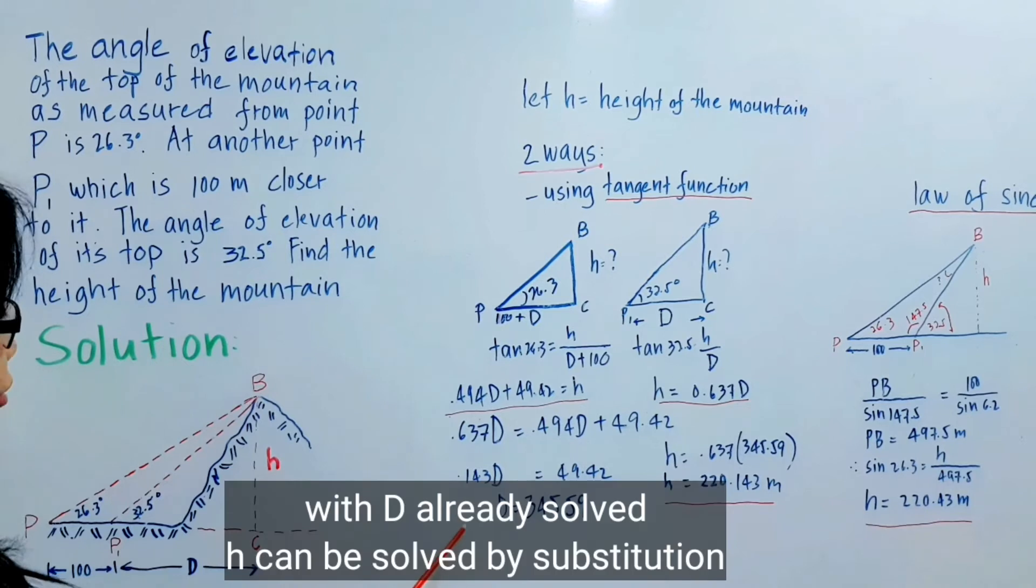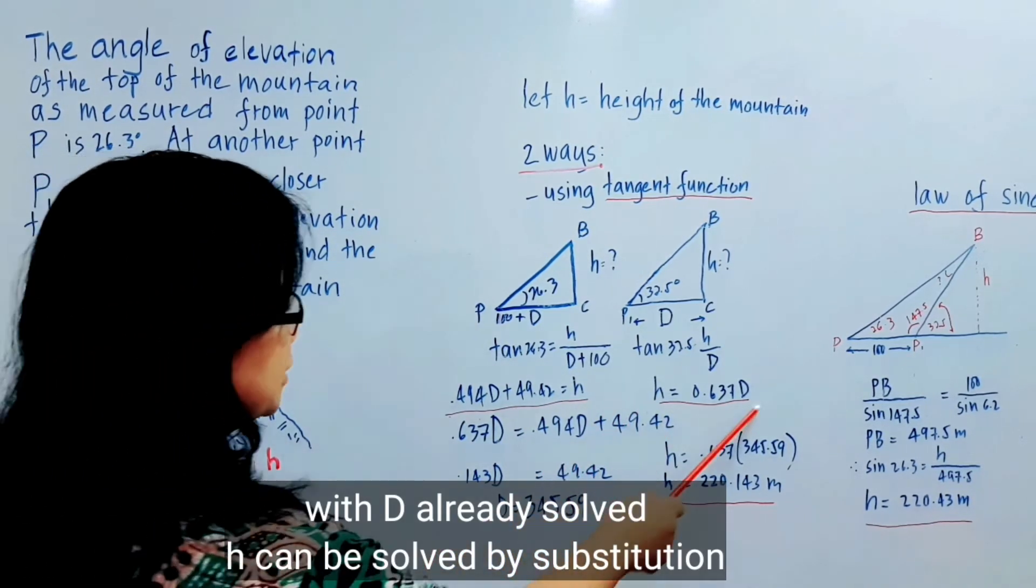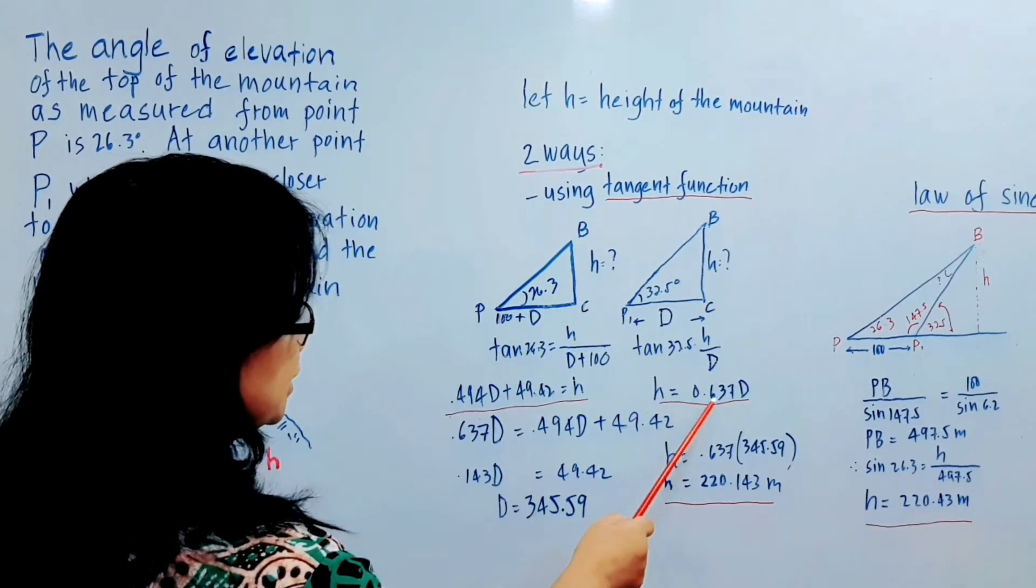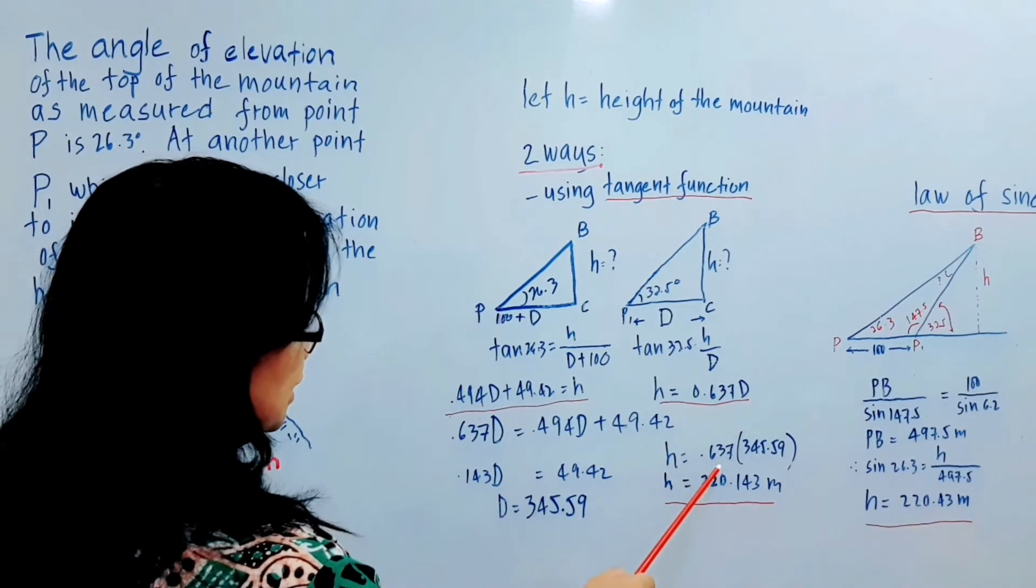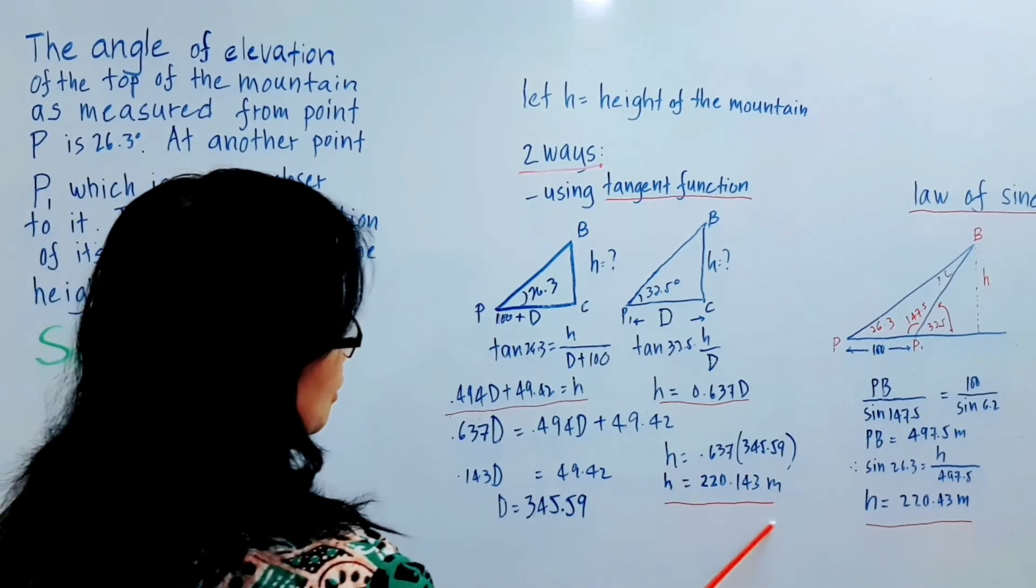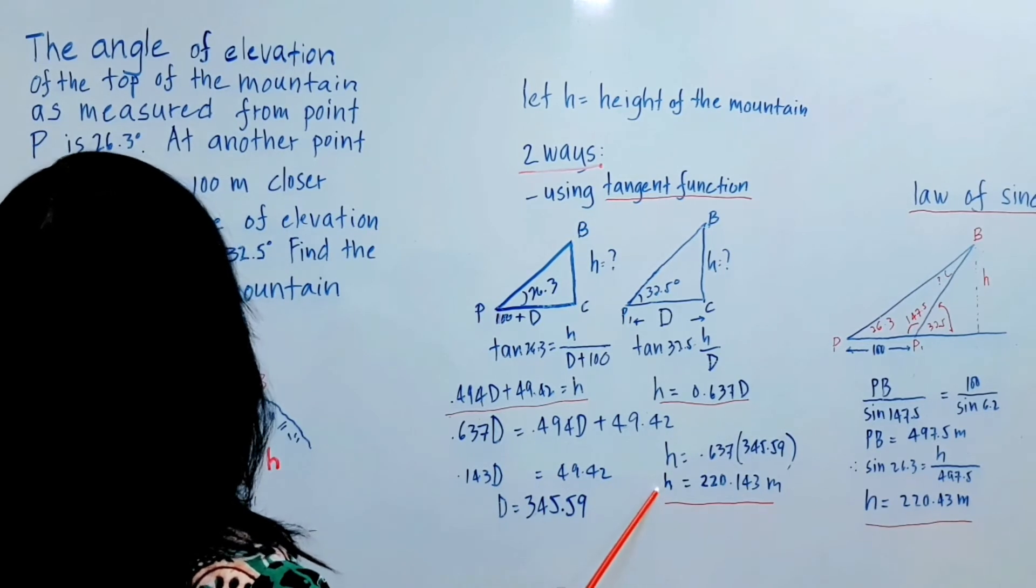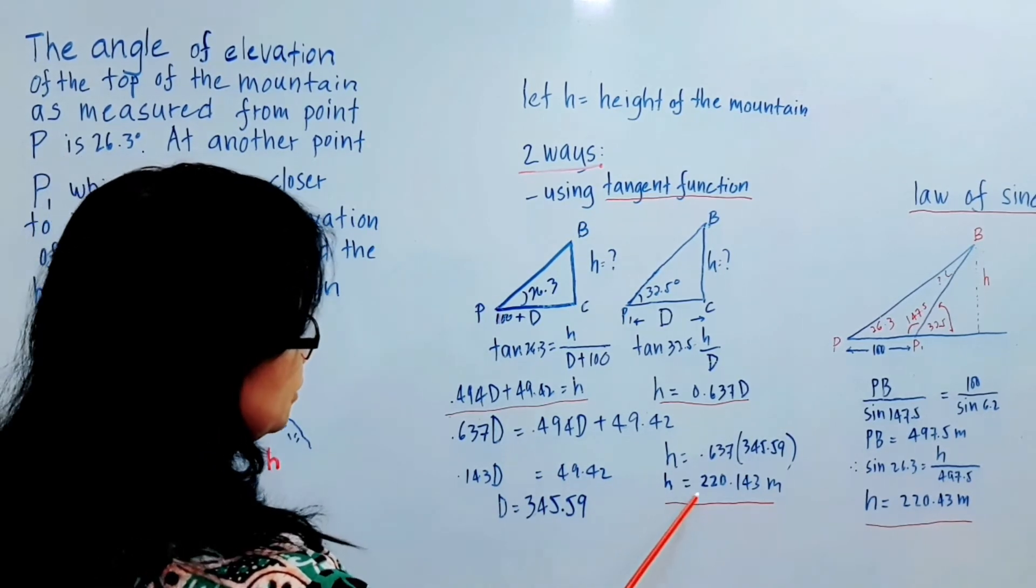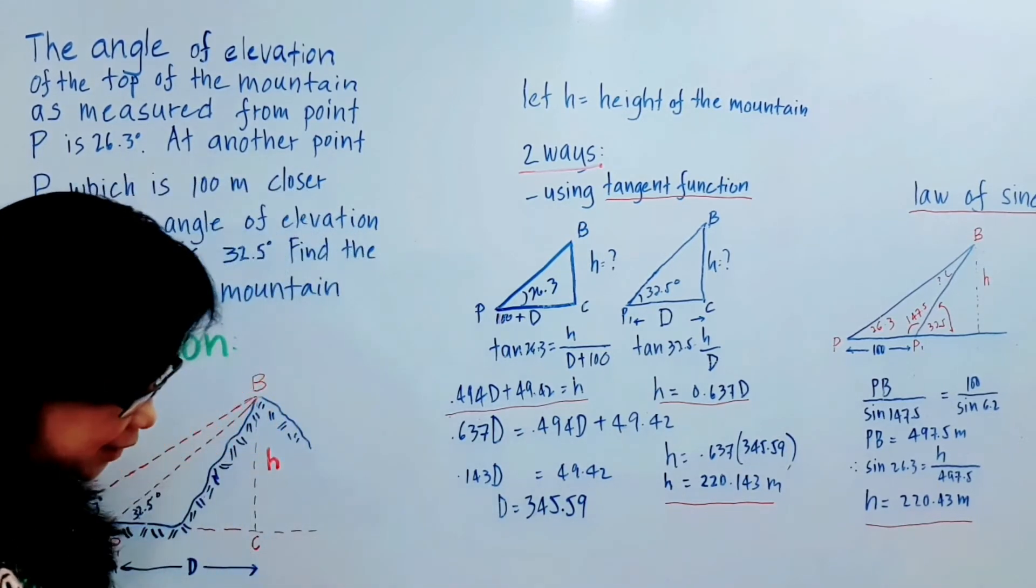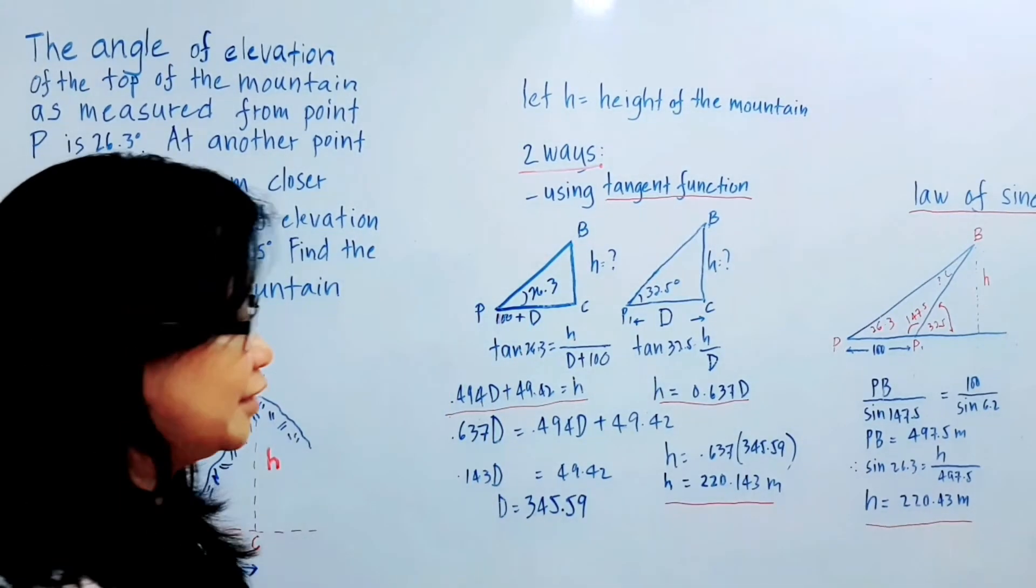Now we can solve the value of H. From this equation, we will see that H equals 0.637 times D. Substituting the value of D, which is 345.5, will result to the value of H, which is the height of the mountain, equal to 220.143 meters. So that's if we use the tangent function.